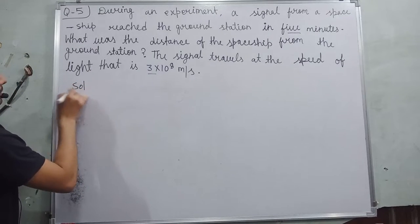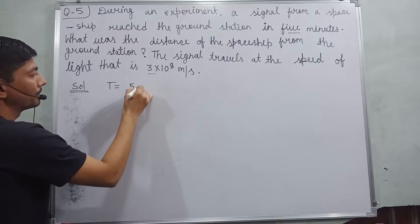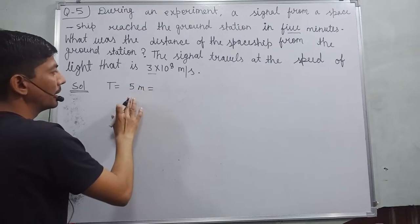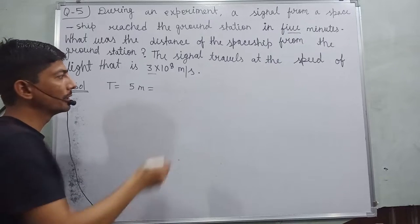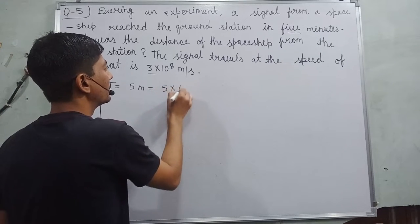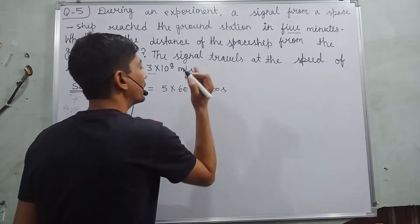Solution: t is equal to 5 minutes, and minutes is converted into seconds. We know that 1 minute equals 60 seconds, so it will be 5 into 60 seconds, and finally it will be 300 seconds.